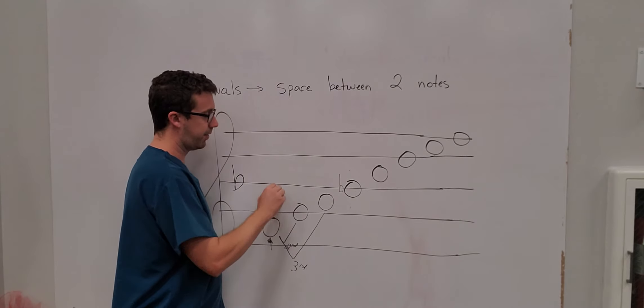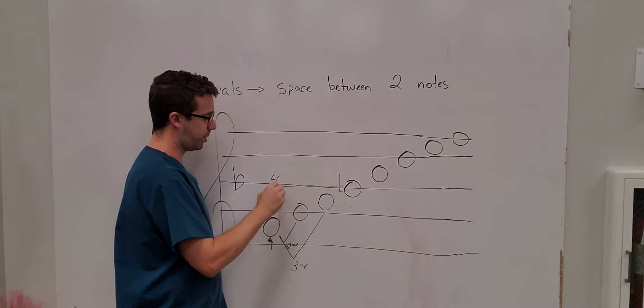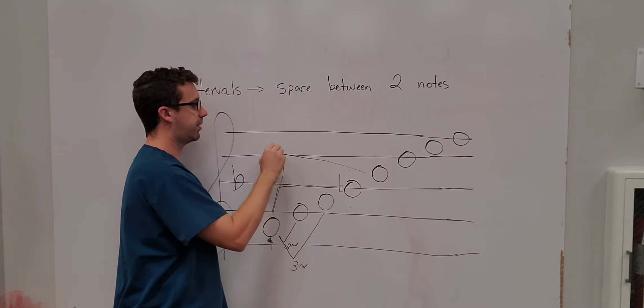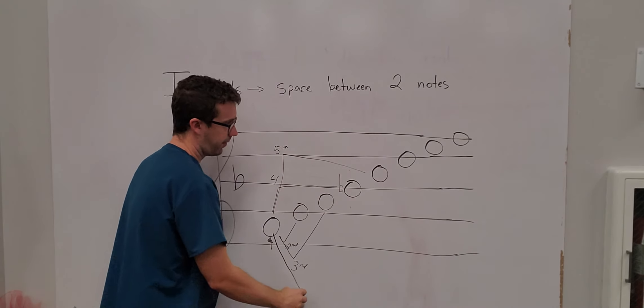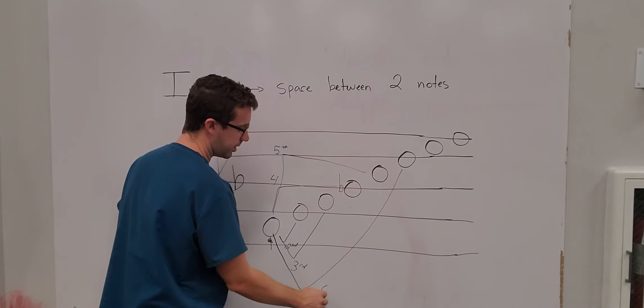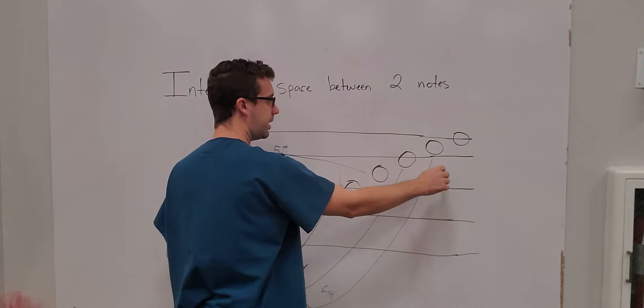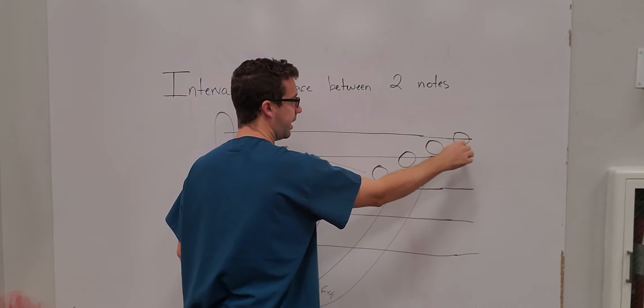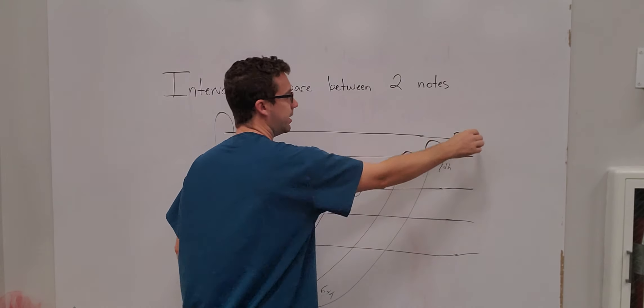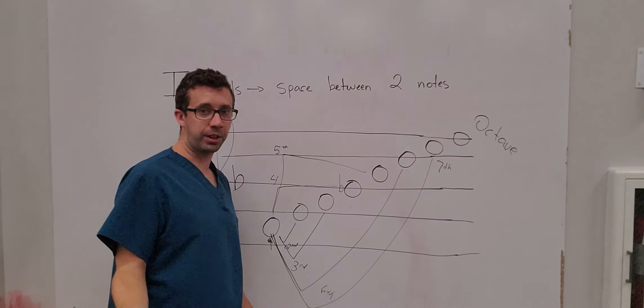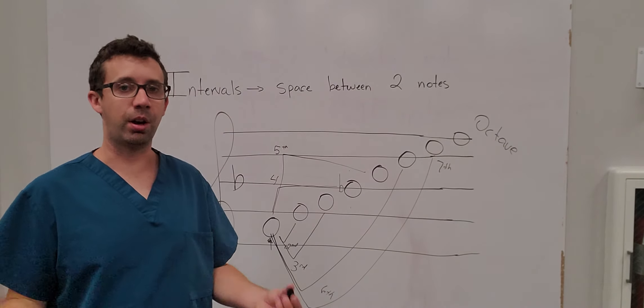F to A is a third. F to B flat is a fourth. F to C is a fifth. F to D is a sixth. F to E is a seventh. And then F to F is an octave. Or an eighth. Eighth is the same thing as an octave.